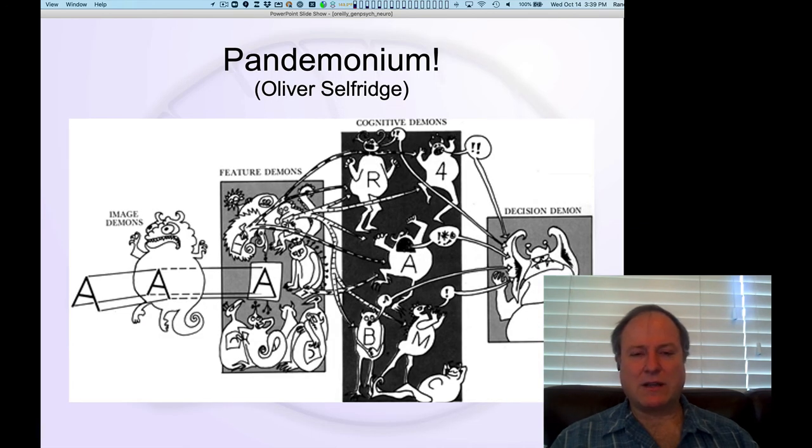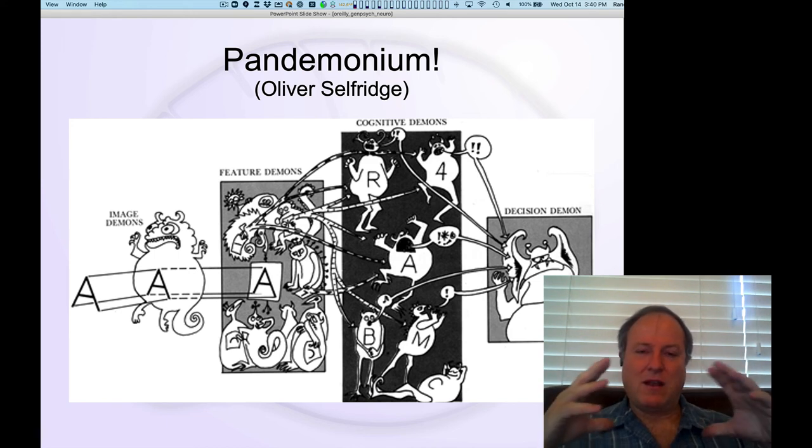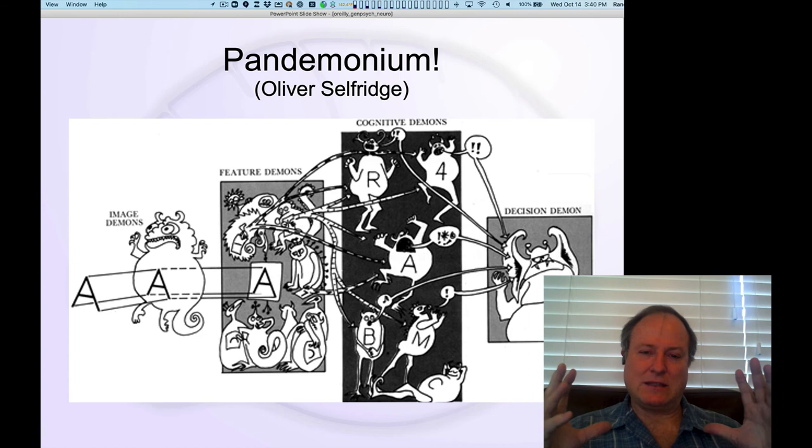So there's been various kinds of ideas over the years about how these kind of detector-like models might operate. This is a diagram from Oliver Selfridge. In an in-person class, I typically actually try to do this and have individual people in the class take on the role of these different demons. You get to be a demon for the day and try to detect different features of an image that's shown on the screen. And what this shows you is that you can break down more complex processes of recognizing patterns by having individual features being detected by individual neurons.